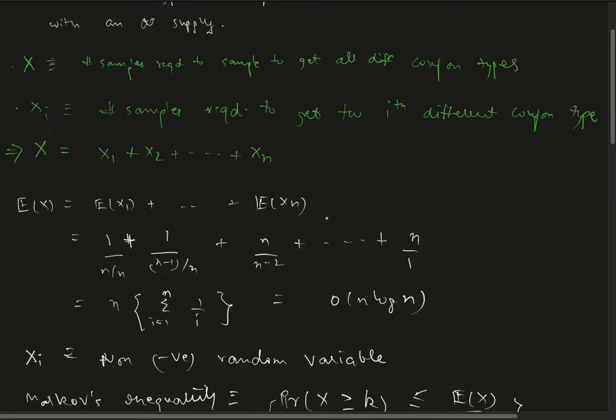One thing we can observe is each X_i is a geometric random variable. For X_i, the probability of drawing a different coupon is (n-i+1) divided by n.